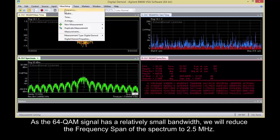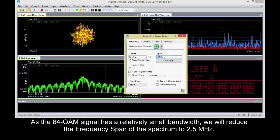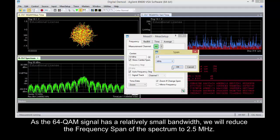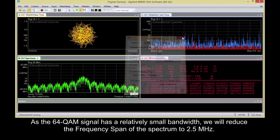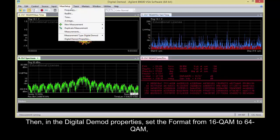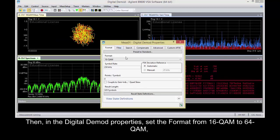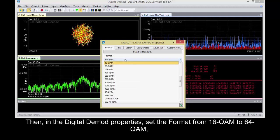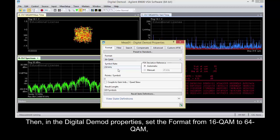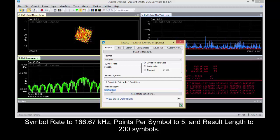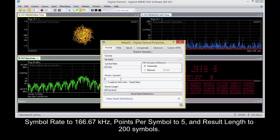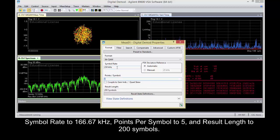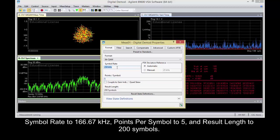As the 64QAM signal has relatively small bandwidth, we will reduce the frequency span of the spectrum to 2.5 MHz. Then in the digital demod properties, set the format from 16QAM to 64QAM, Symbol rate to 166.67 kHz, points per symbol to 5, and result length to 200 symbols.